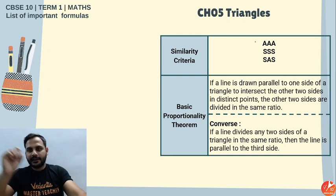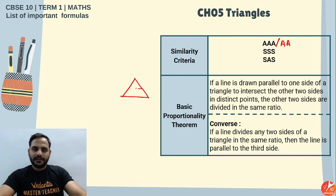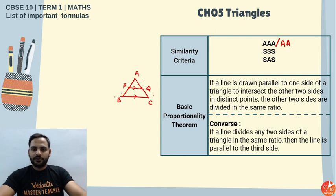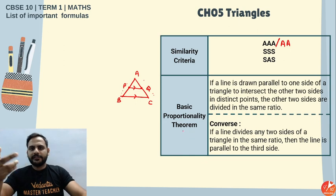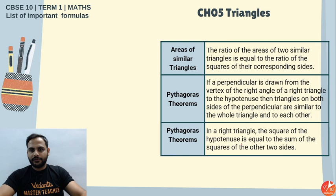Triangles — similarity criteria: AAA (or AA is sufficient), SSS, and SAS. The Basic Proportionality Theorem (BPT) states that if a line is parallel to one side of a triangle, the upper part divided by the lower part on one side equals the same ratio on the other side. Converse: if the ratios are equal, the lines are parallel.